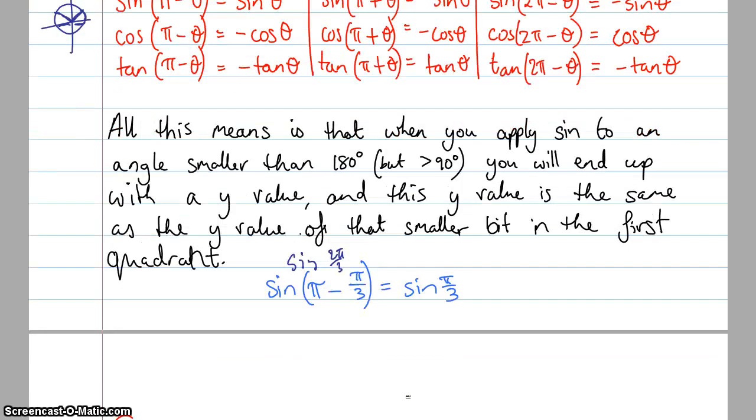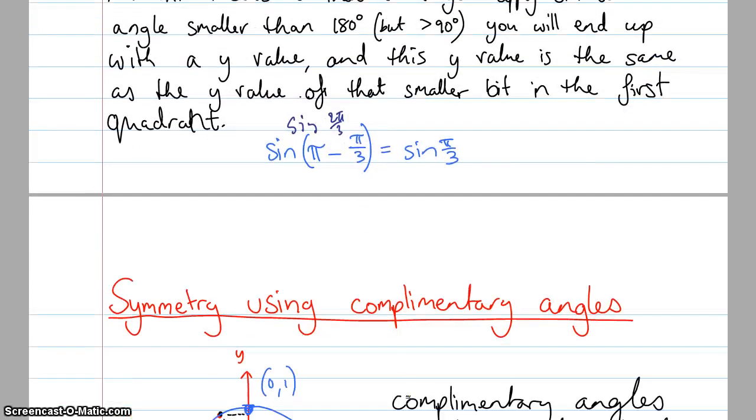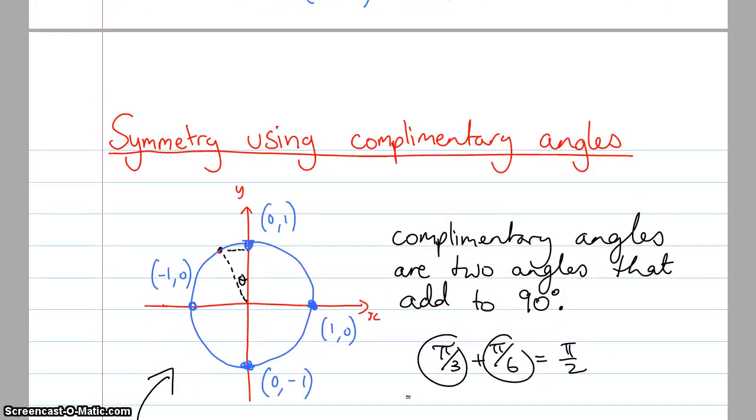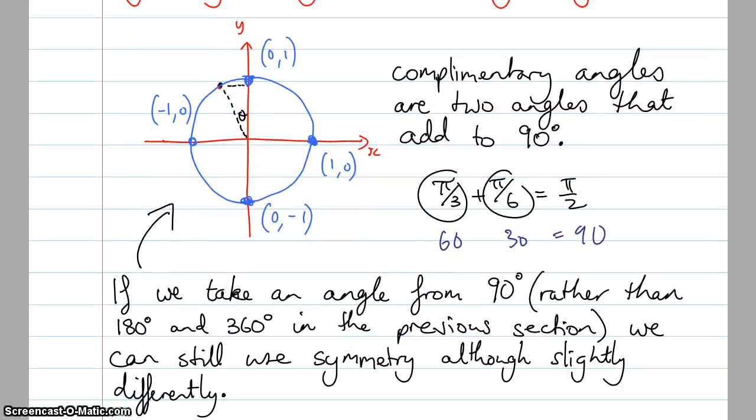This next little bit, I don't know whether you've seen before. This is using complementary angles. Complementary angles are two angles that add up to 90 degrees. So for example, π/3 plus π/6, which will give us π/2, or if you'd like to put it this way, 60 plus 30 equals 90. If we take an angle from 90 degrees rather than 180 and 360, we can still use symmetry, although slightly different.